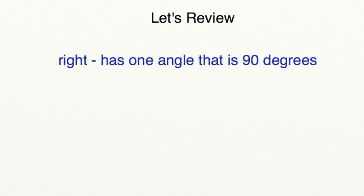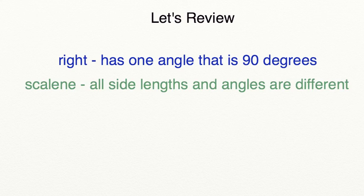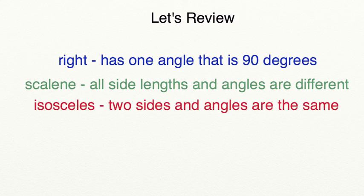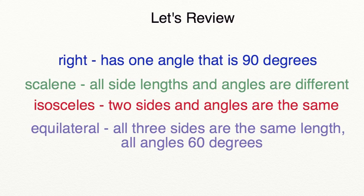Let's take a moment to review what you've learned in today's lesson. A right triangle is a triangle that has one 90 degree angle. A scalene triangle has all side lengths and all angles that are different. An isosceles triangle has two sides and two angles that are going to be the same. And an equilateral triangle has all three sides and all three angles that are the same, which also means that it has to have all angles at 60 degrees.